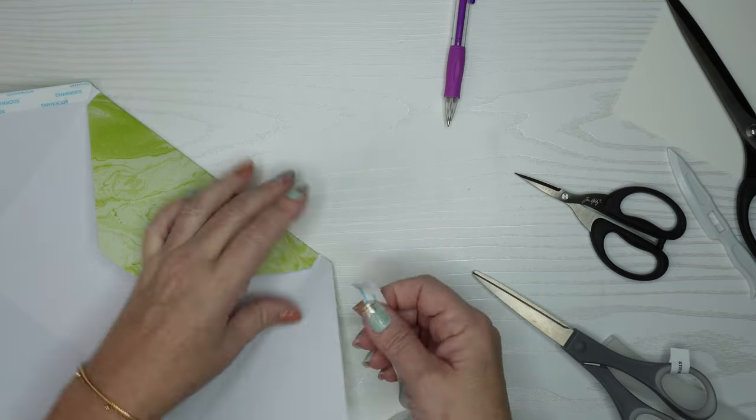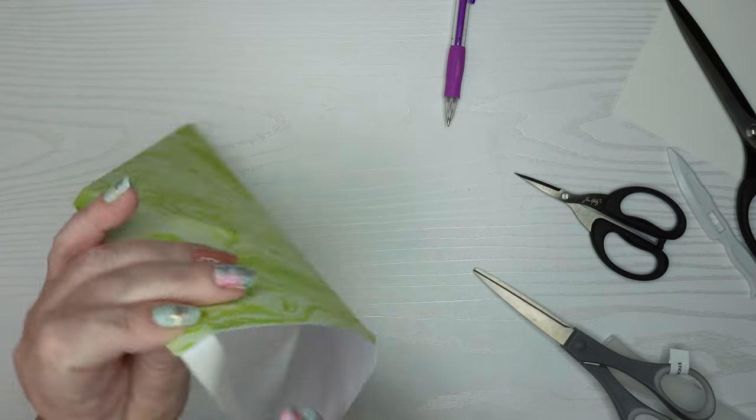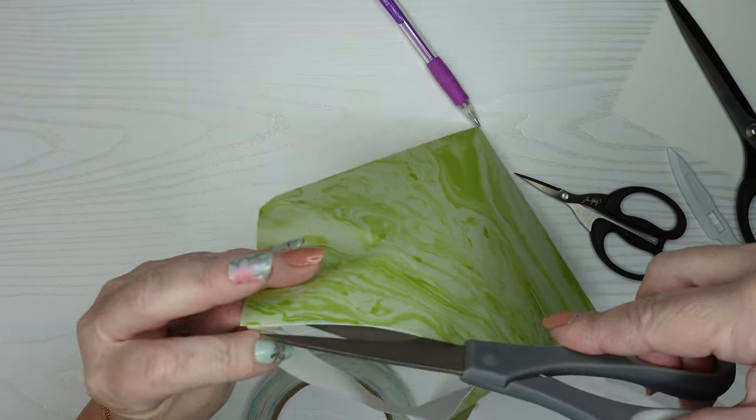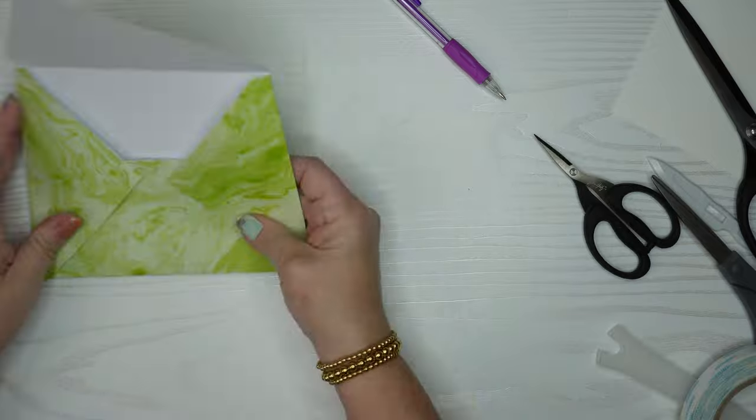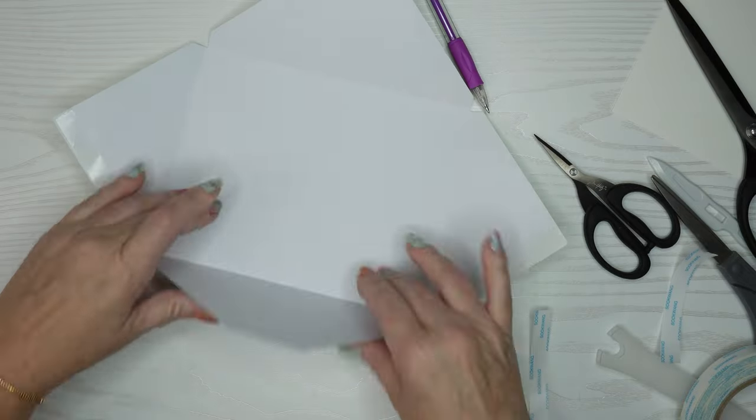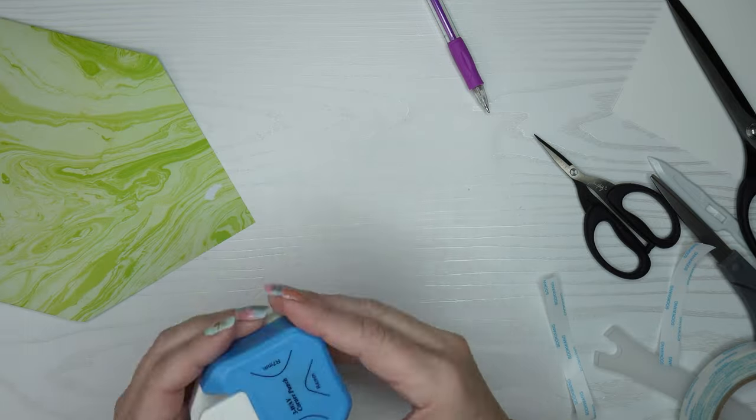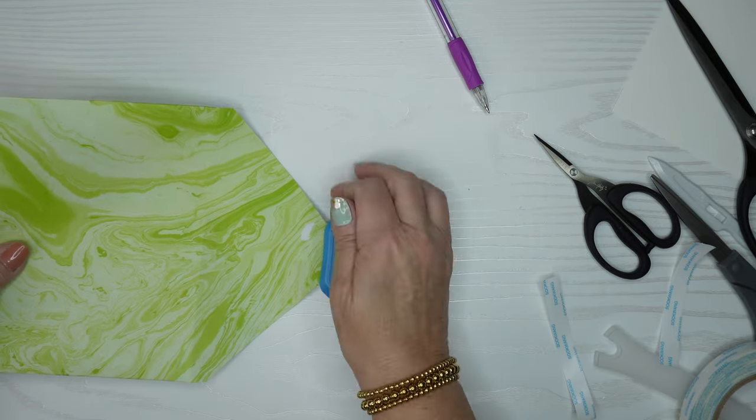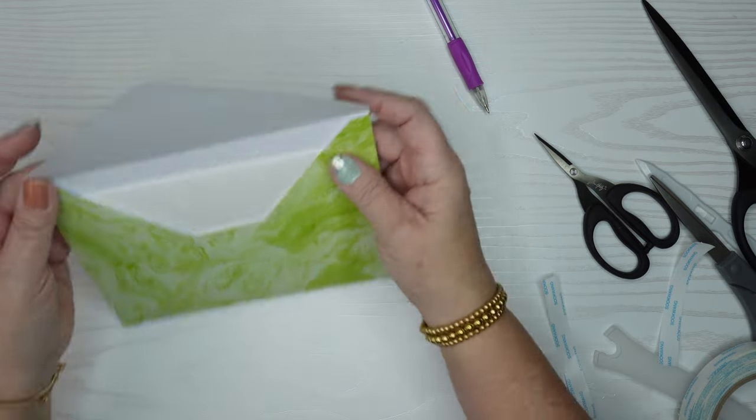I'm using double-sided tape that I get off of Amazon. I will link everything in the description box below. I'm using my sticky scissors. I keep one set of scissors for sticky stuff so that I don't ruin my nice Tim Holtz scissors. I'm just going to be putting this double-sided tape on the back. You can use glue too. I just find this to make it a little bit sturdier. Then we'll take that tape off and just press that down. A lot of people like to round that top piece of the envelope so I just use my punch.